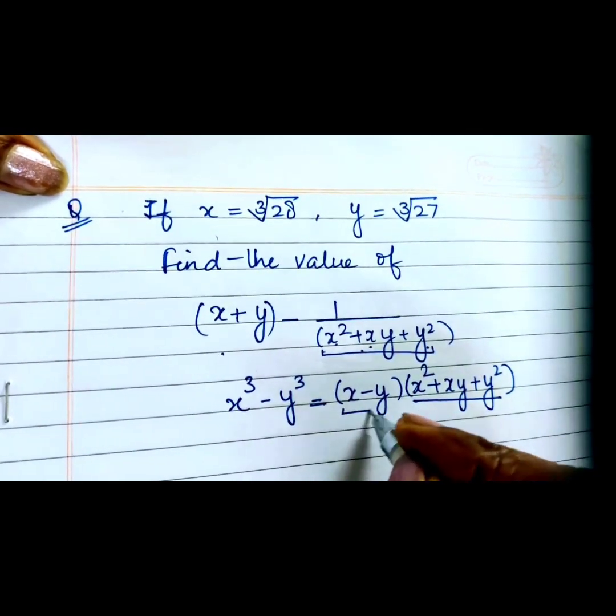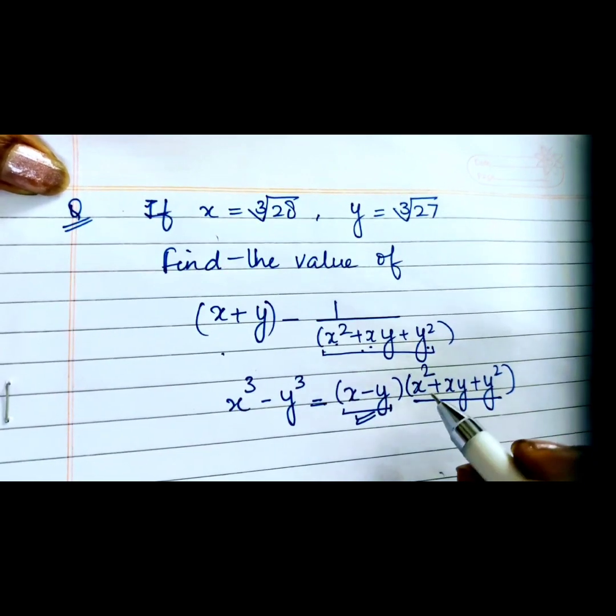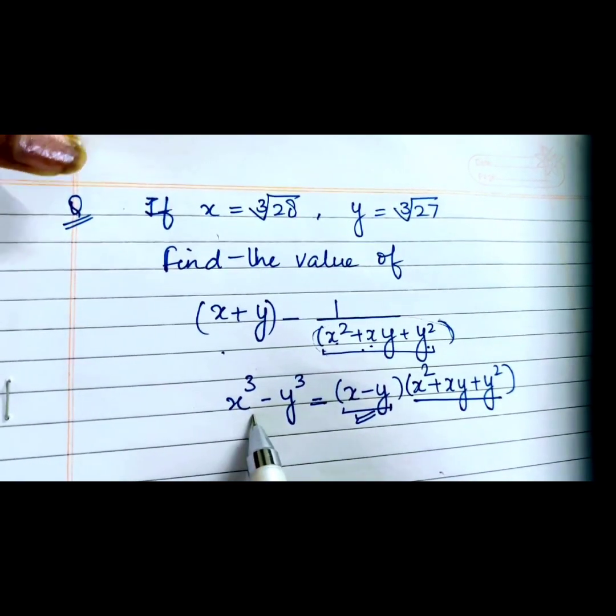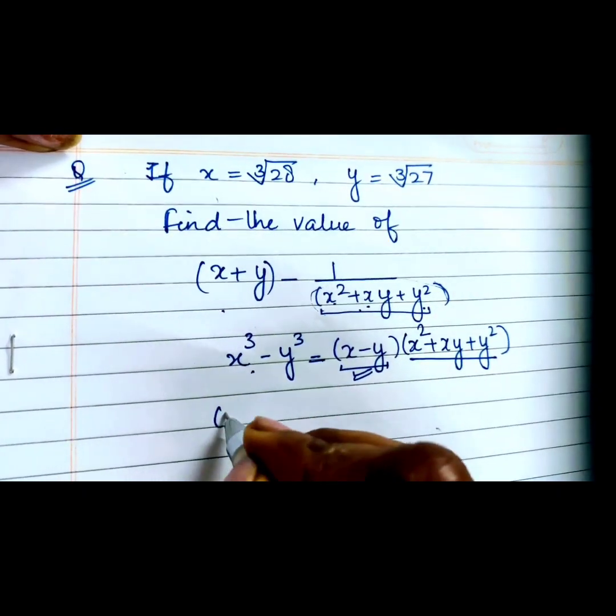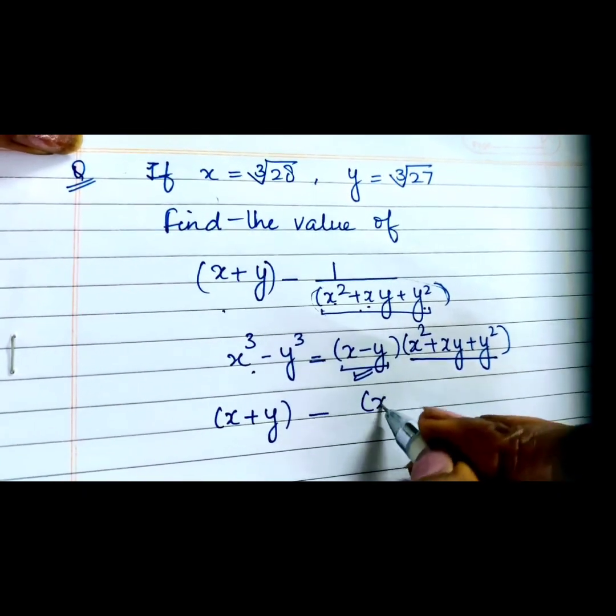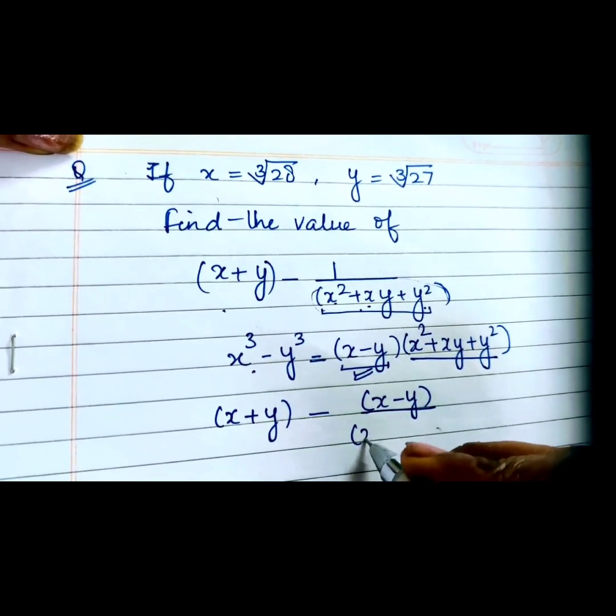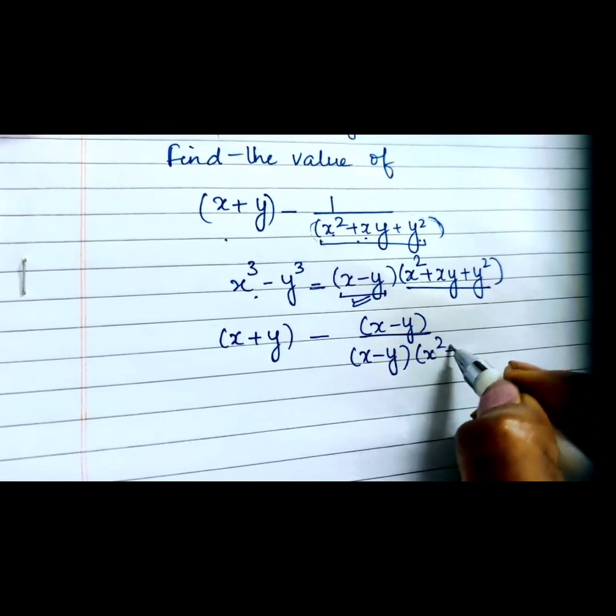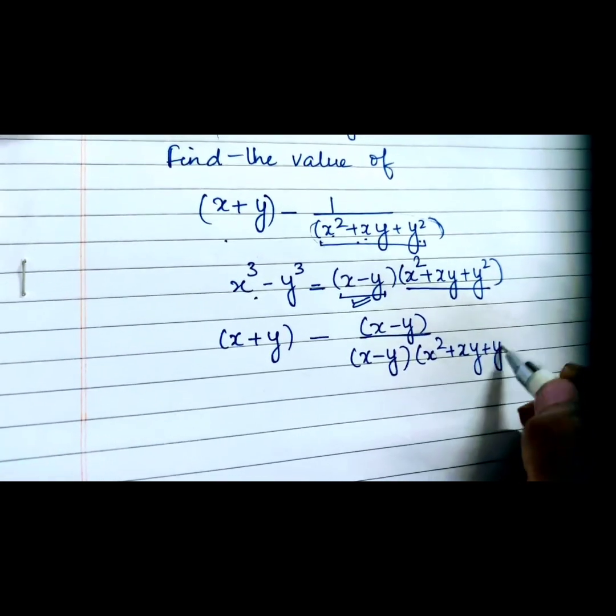this formula. So what we will do here is multiply the numerator and denominator by (x - y). After multiplying,